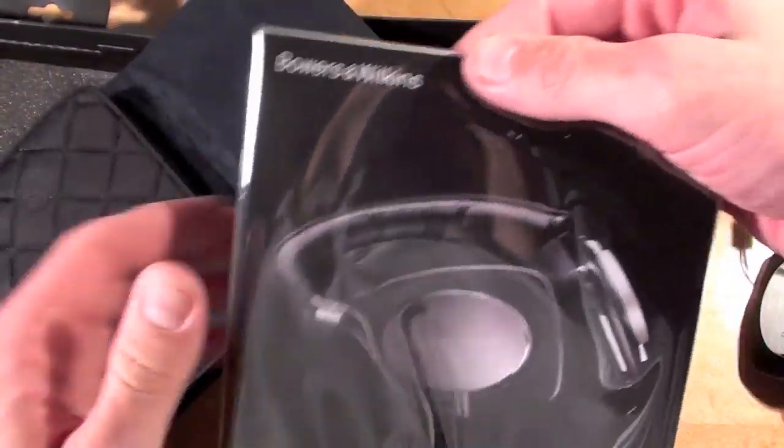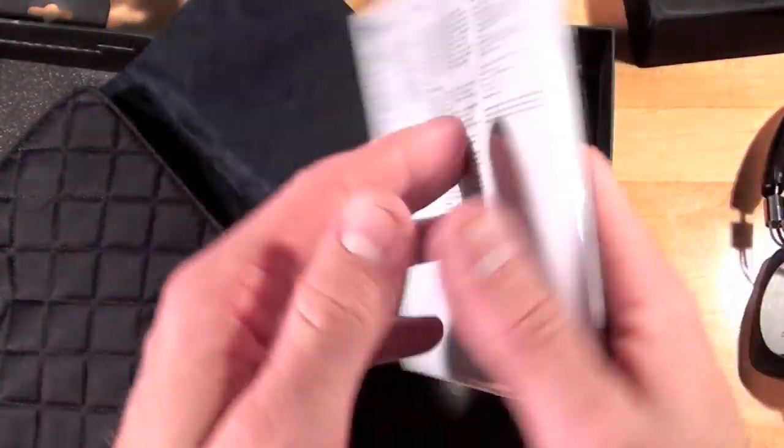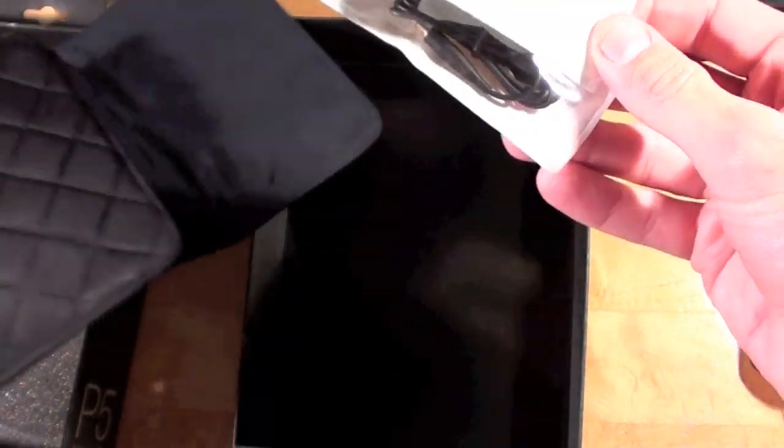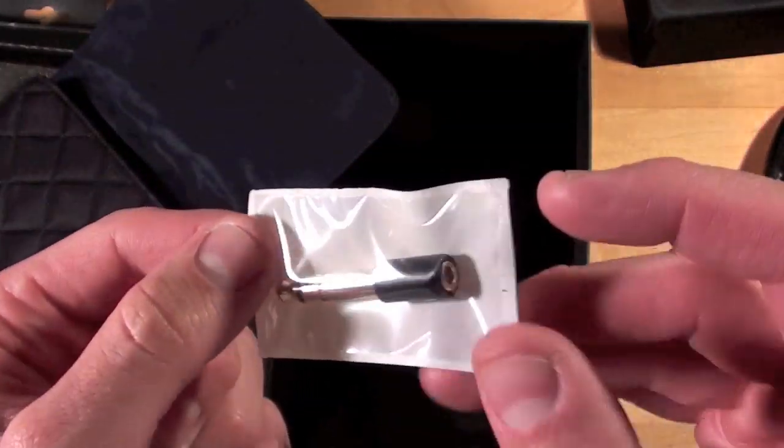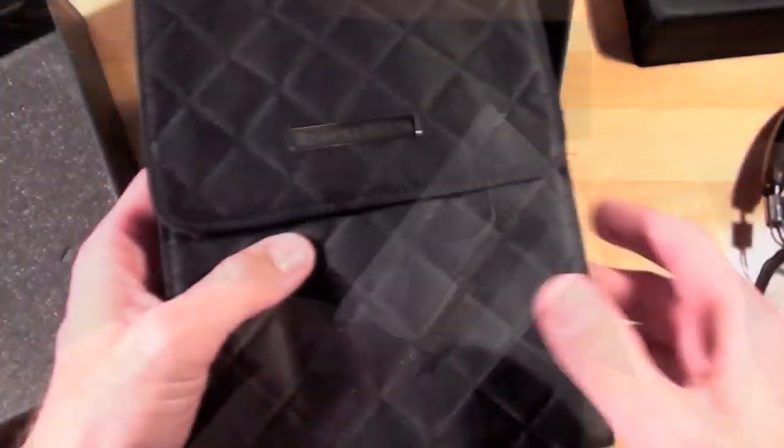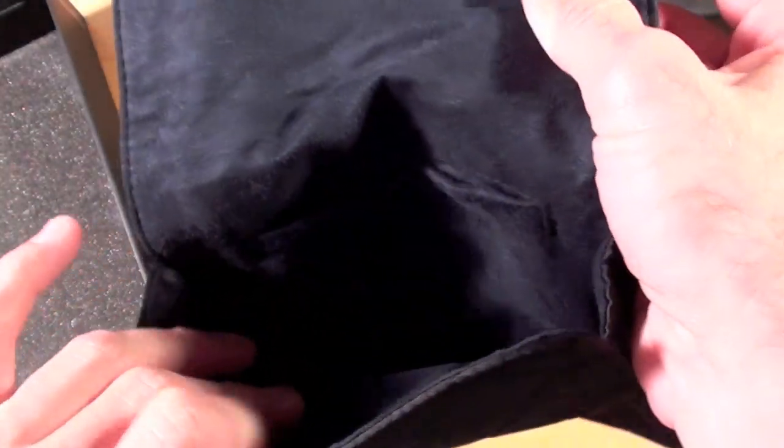On the inside we have the literature still wrapped in its plastic. And we also have the accessories including a replacement cable and a quarter-inch headphone jack adapter. Now let's go ahead and install the headphones to see how they fit in the pouch.